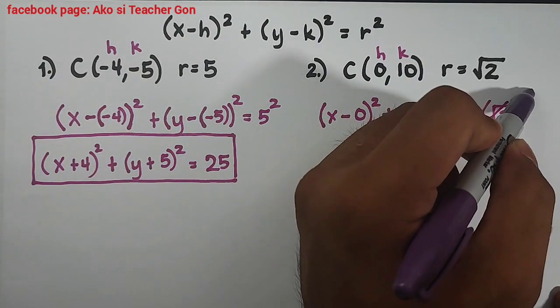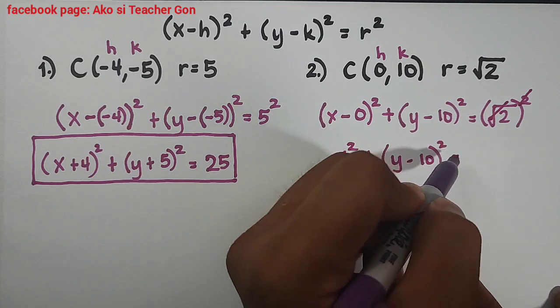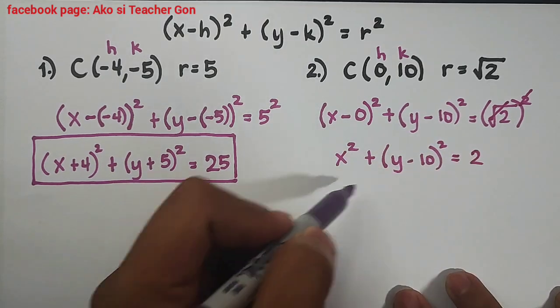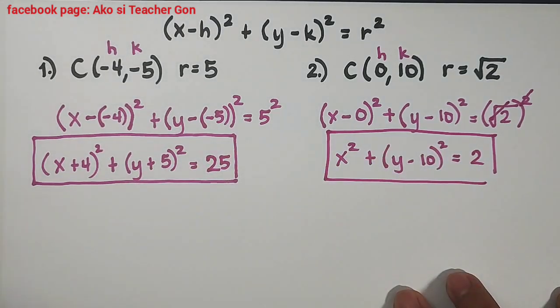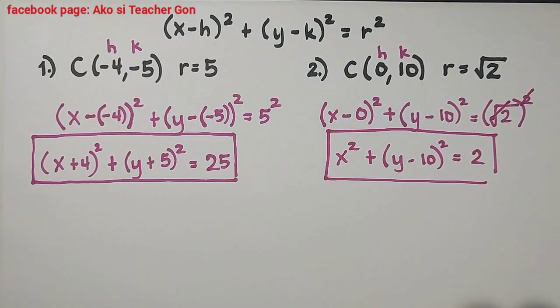And that's it guys, this is now the standard form of the equation given the center (0, 10) and radius of square root of 2.